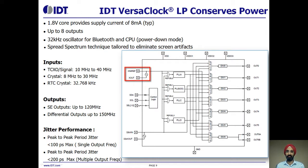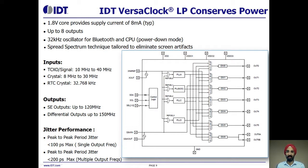The reference clock can come from either a TCXO or a fundamental mode crystal. An additional 32 kHz crystal oscillator is available to provide a real-time clock or non-critical performance megahertz processor clock.